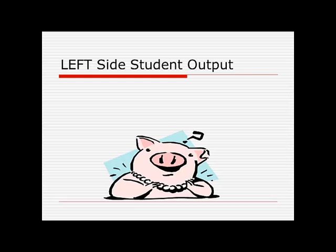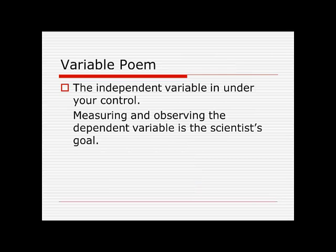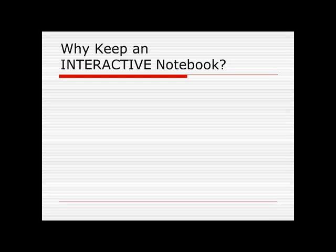Another idea for a reflection can be mnemonic devices, pictures, and rhymes. I bet you know some already. For example, "Please excuse my dear Aunt Sally" — that's a mnemonic device for helping you remember the order of operations. Another idea for remembering things and for a reflection would be a poem. This is an example of a poem that we made up to help remember the difference between an independent variable and a dependent variable.